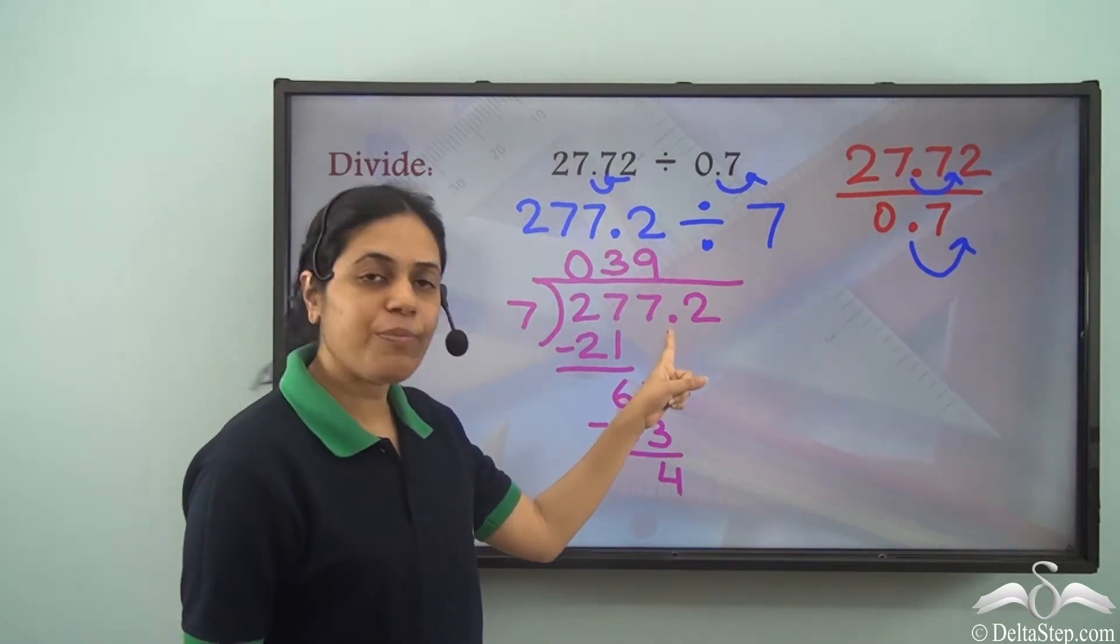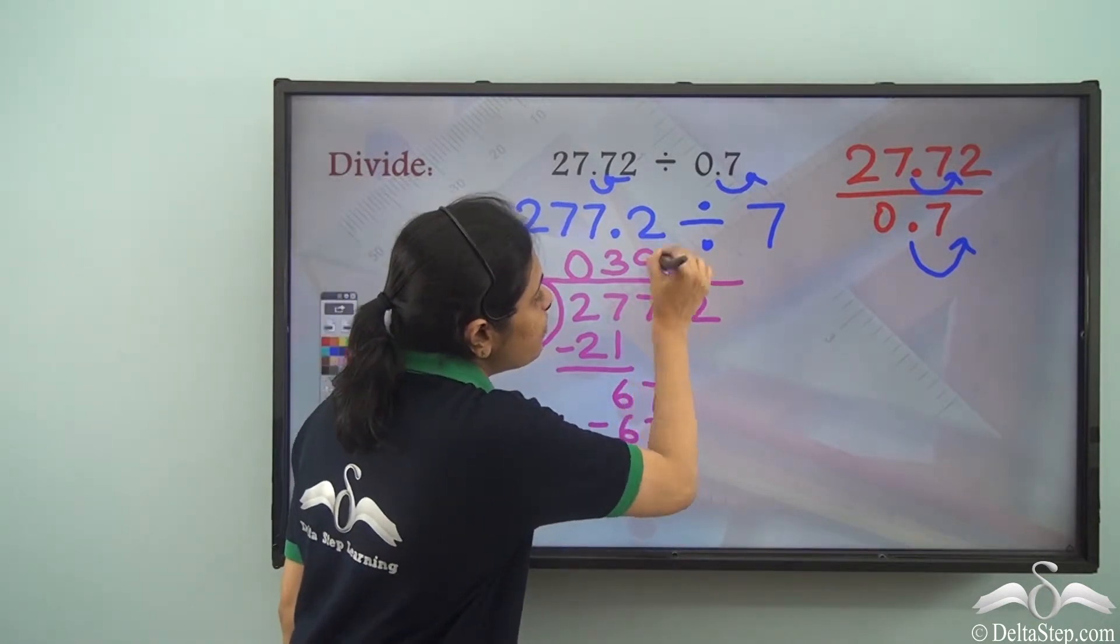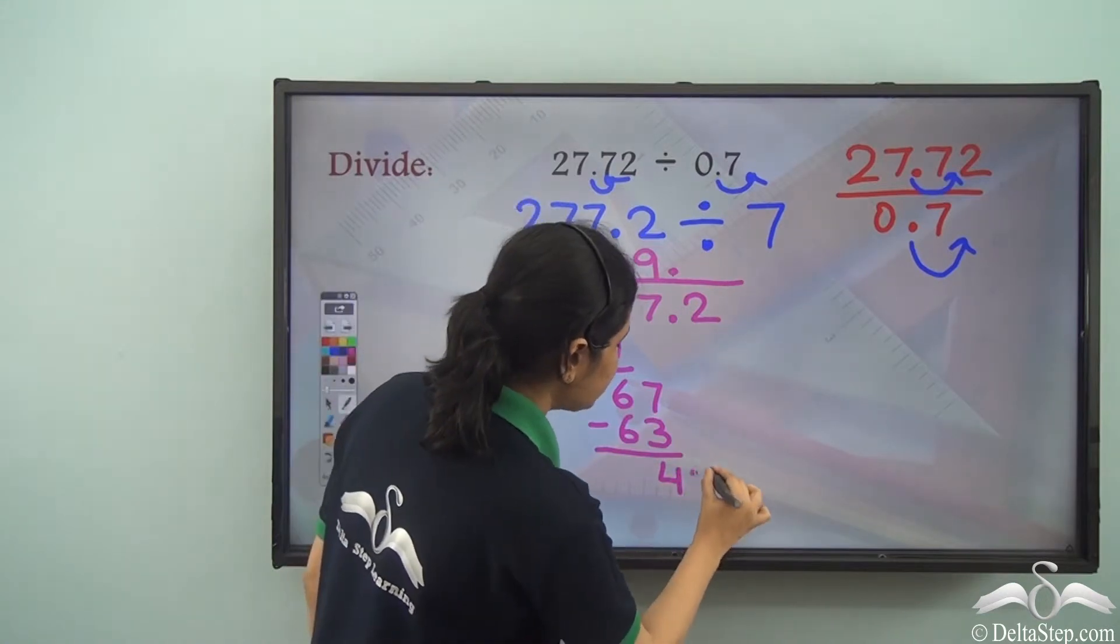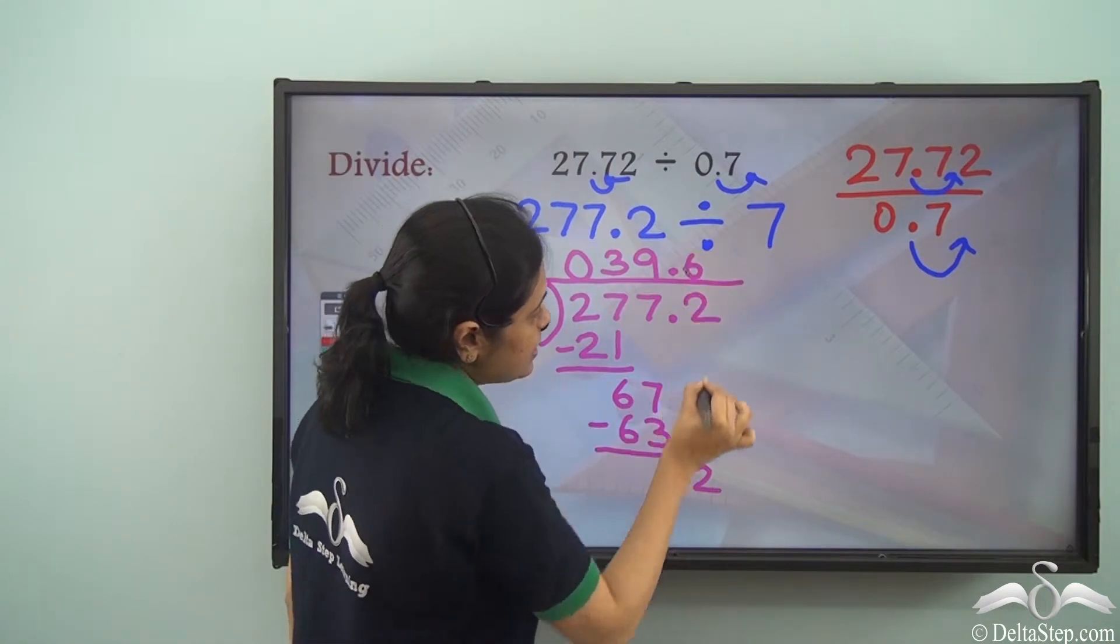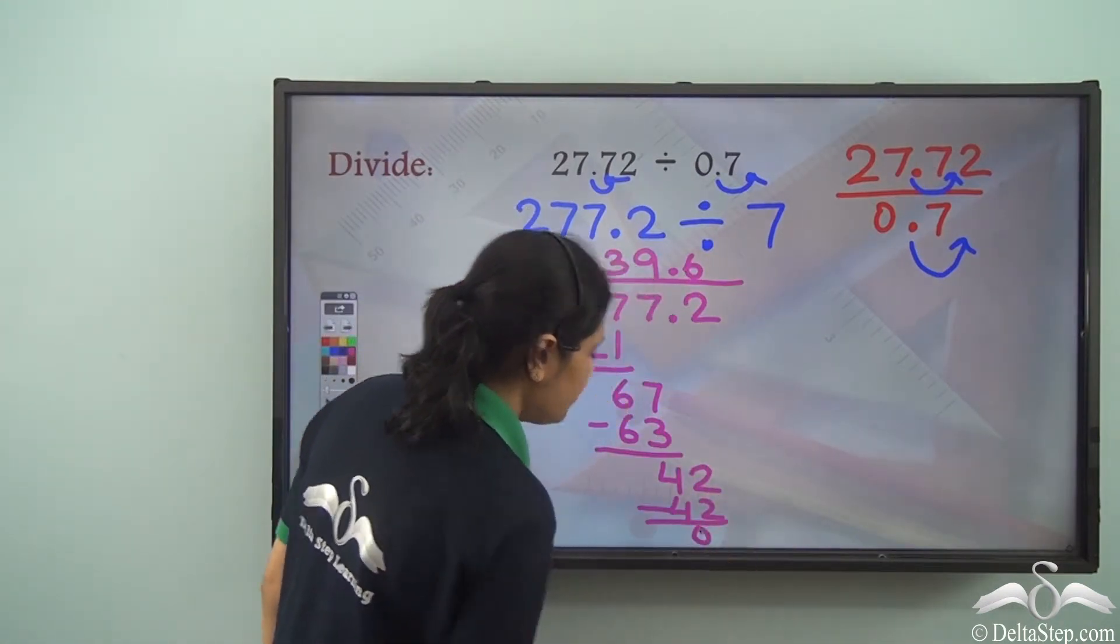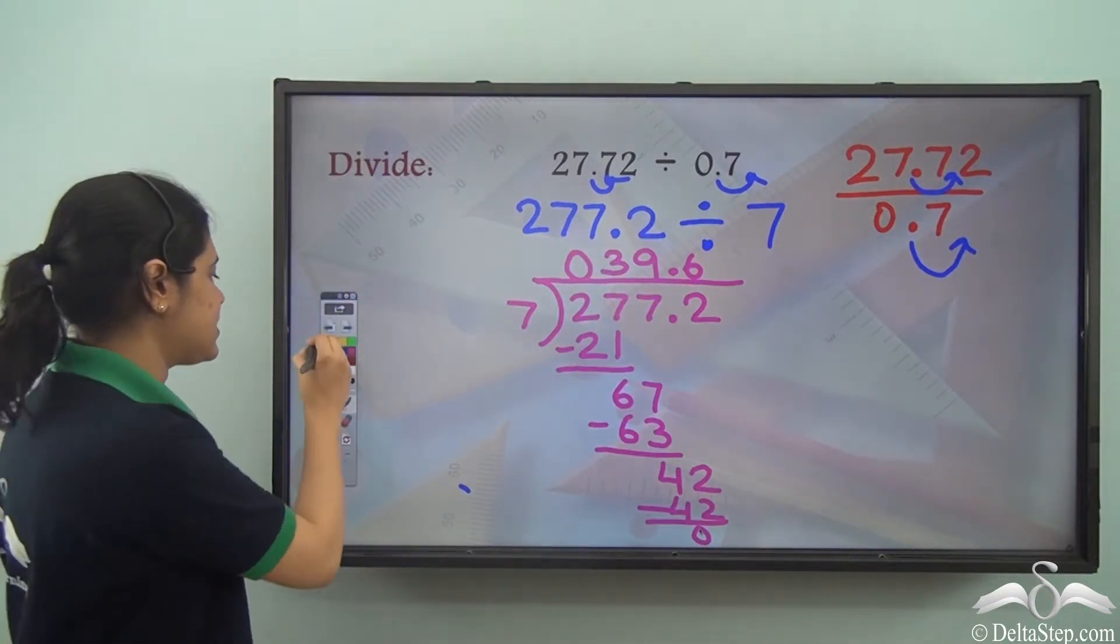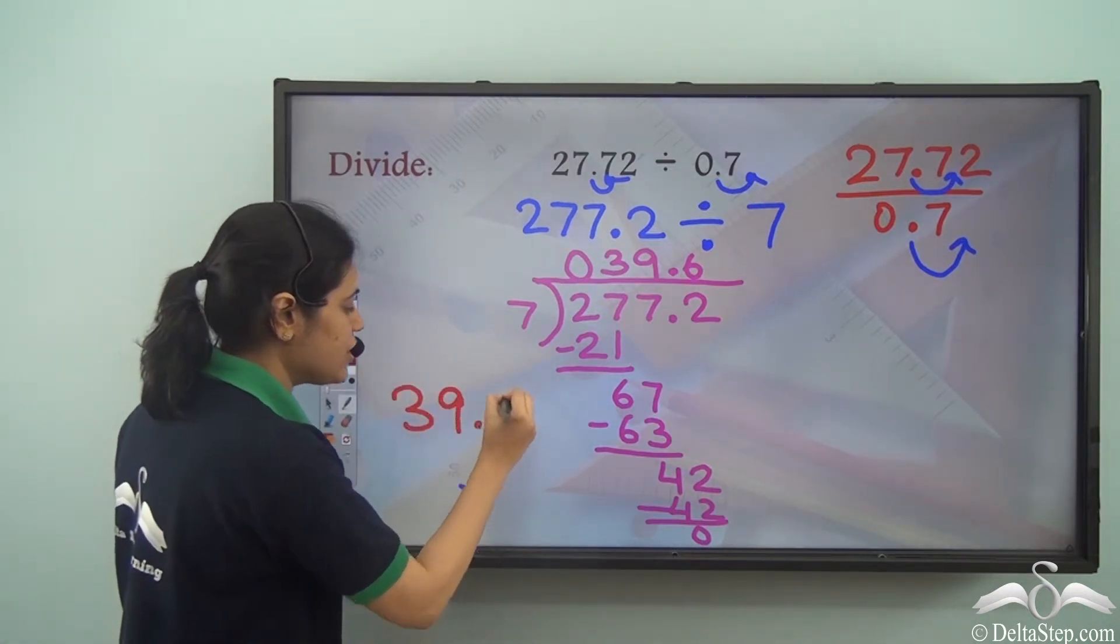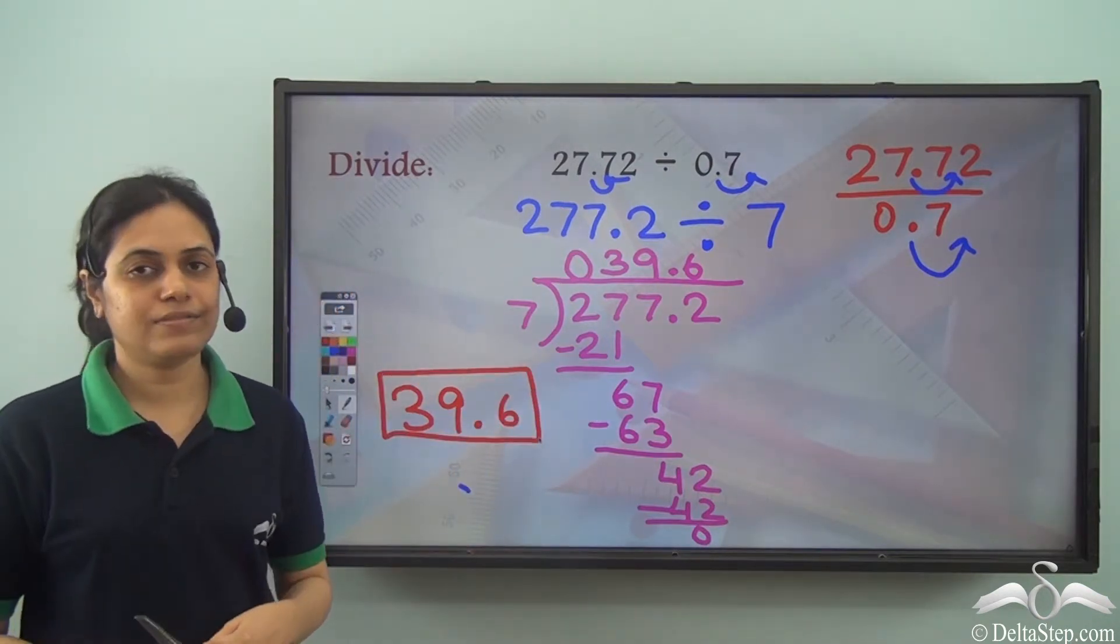Now there is a decimal point here. When we get a decimal point in the dividend, we put a decimal point in the quotient as well. And now I move to the next digit which is 2. 7 into 6 is 42. So I get the remainder 0. So the quotient is 39.6. This is the answer.